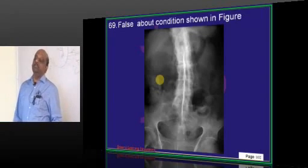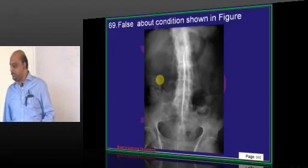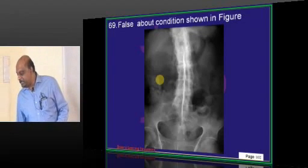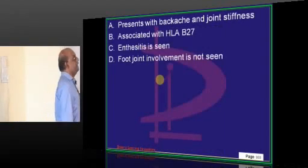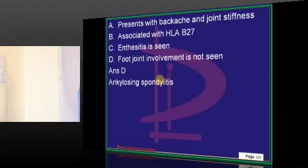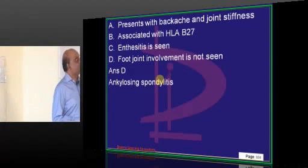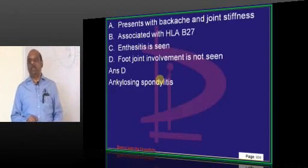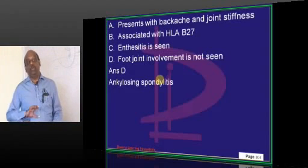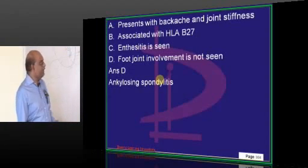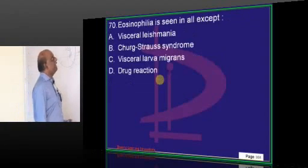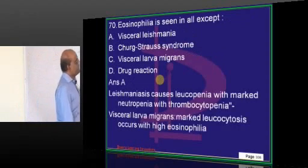Bamboo spine is the feature of ankylosing spondylitis. It leads to enthesitis, HLA-B27 is found, and foot involvement is a definite feature of ankylosing spondylitis.